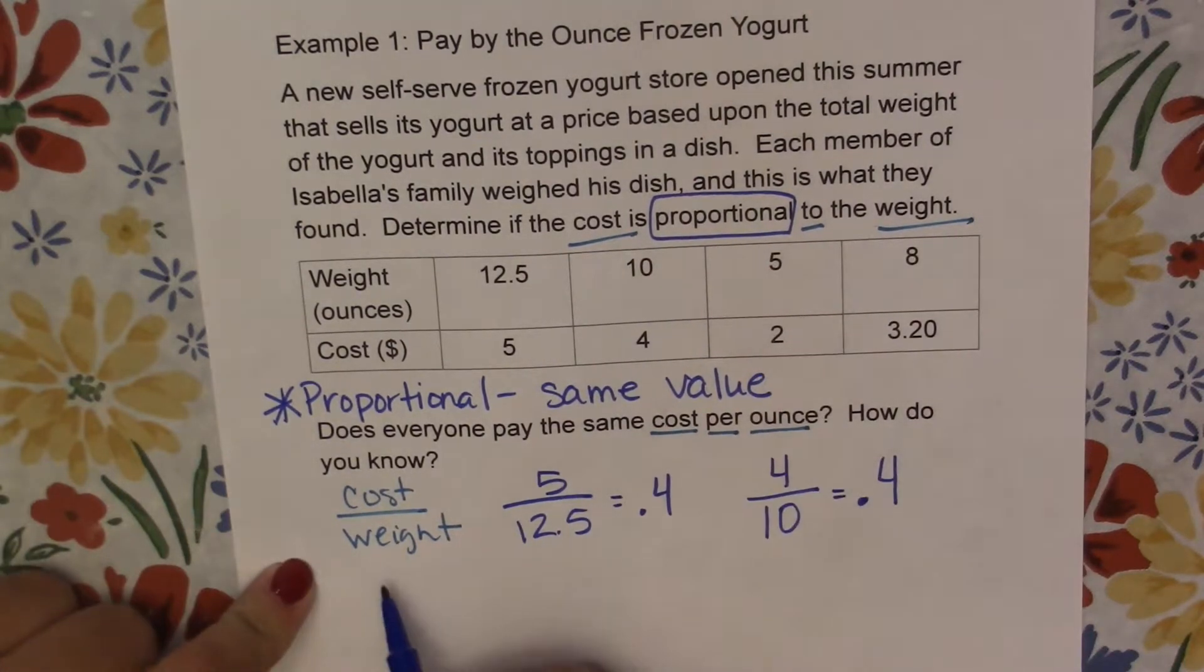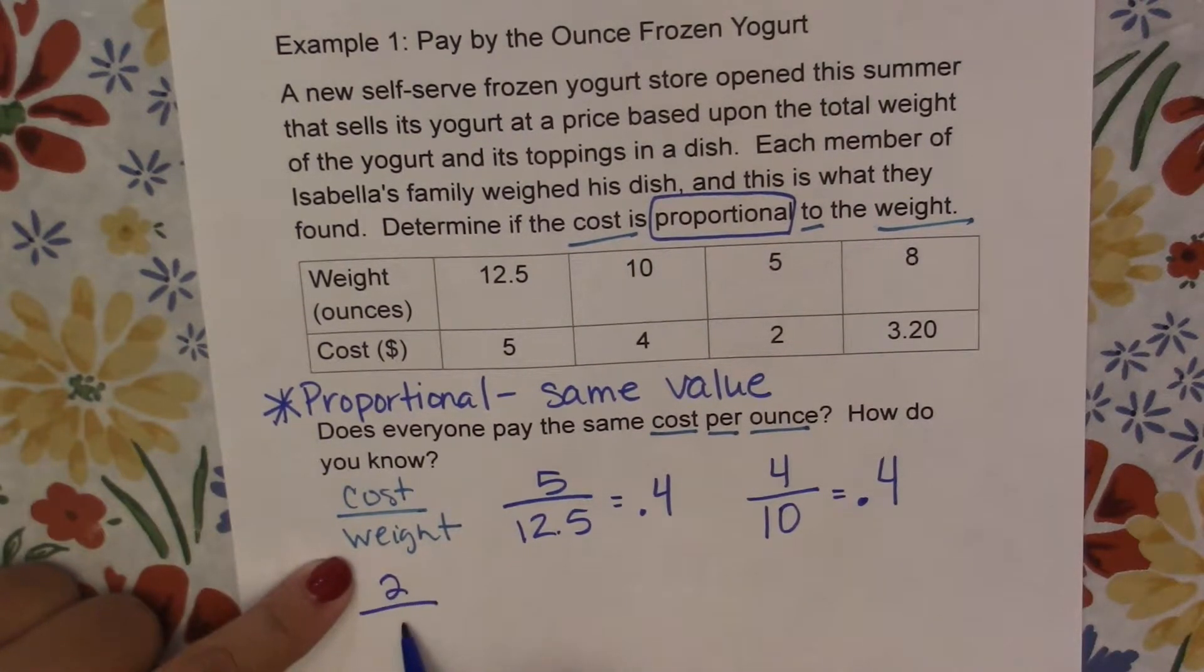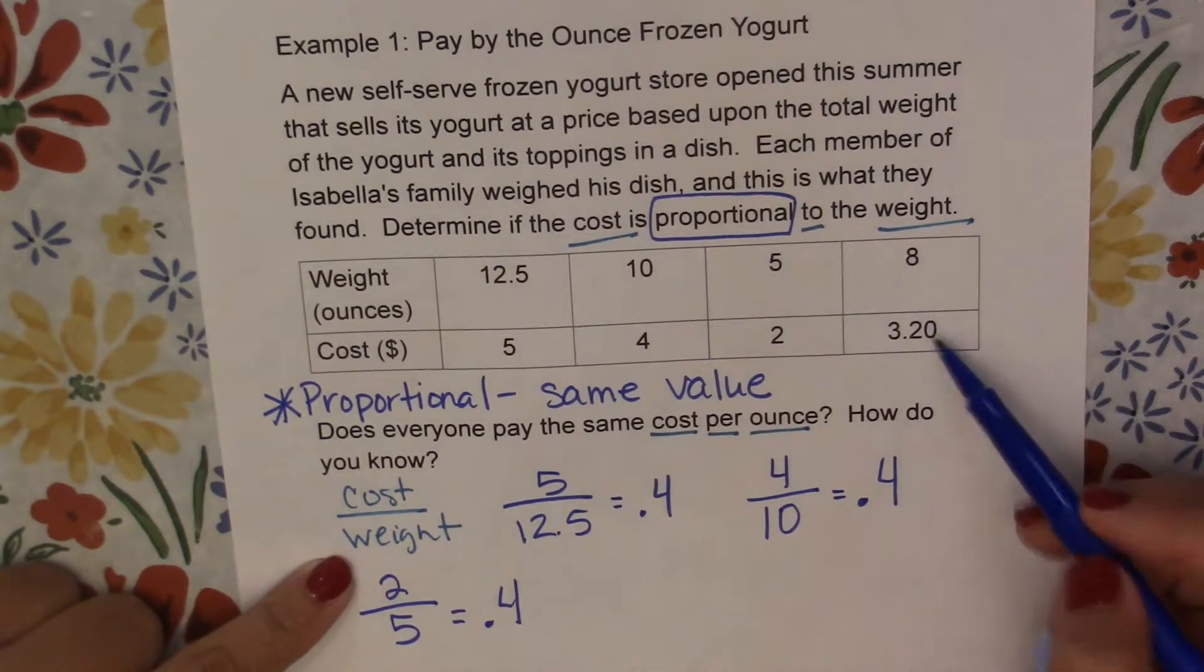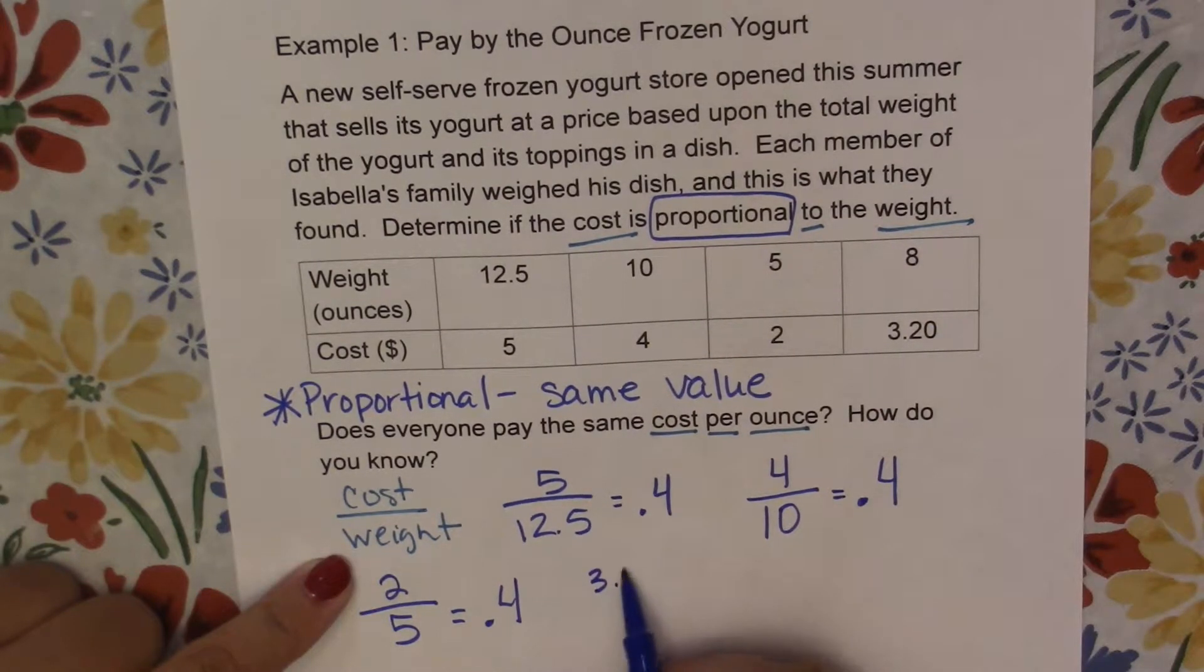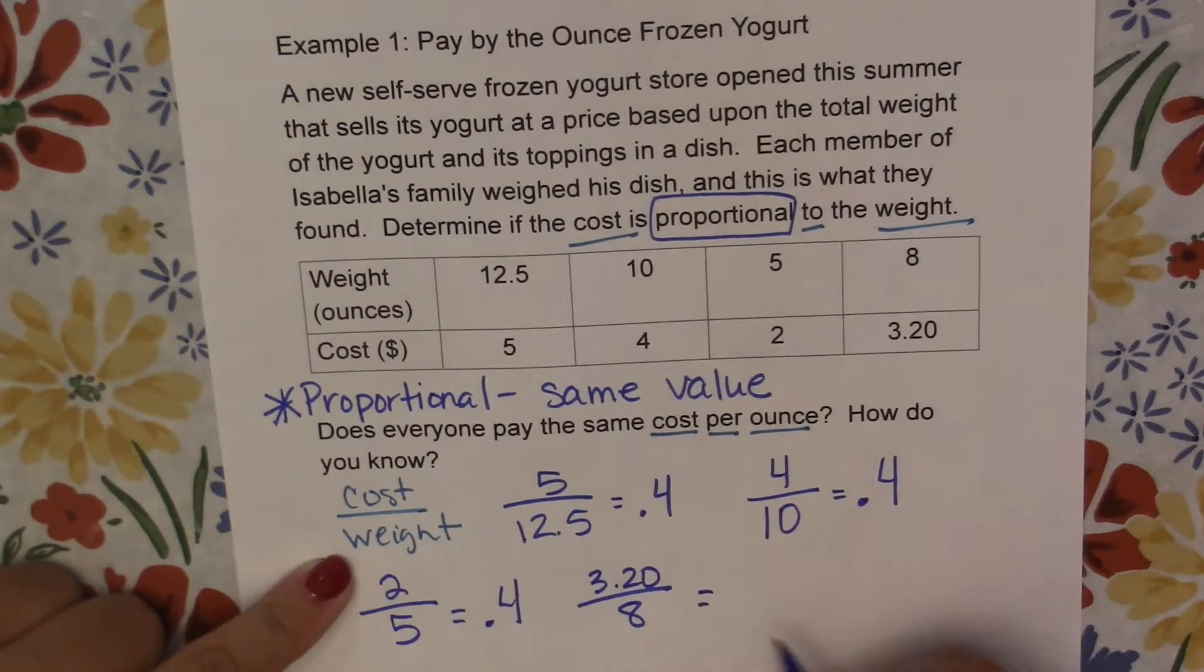Alright, let's do this third one. Our cost is $2 and our weight was 5 ounces. So we're going to divide 2 divided by 5, which is 0.4. And then let's do our last one here: our cost of $3.20 divided by 8 ounces, which when we divide is 0.4.